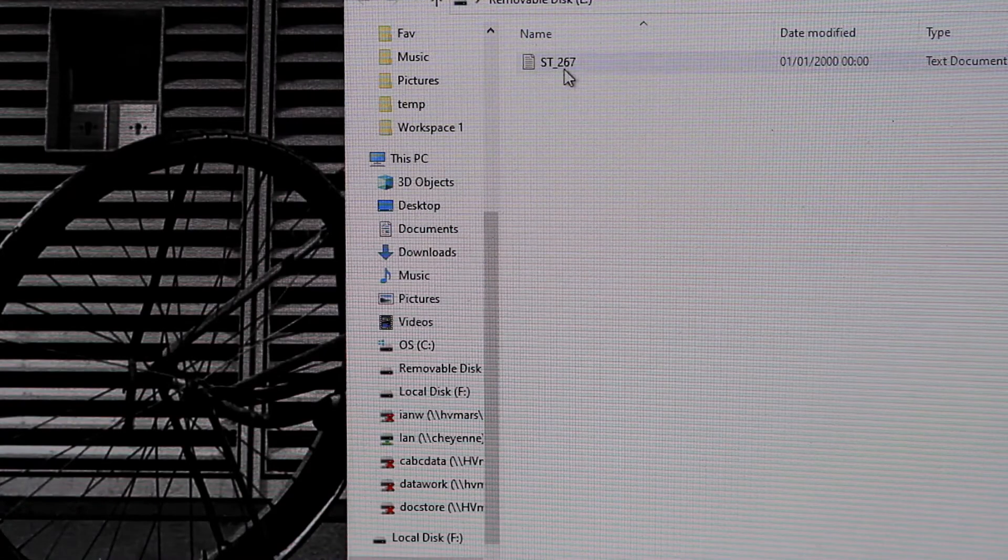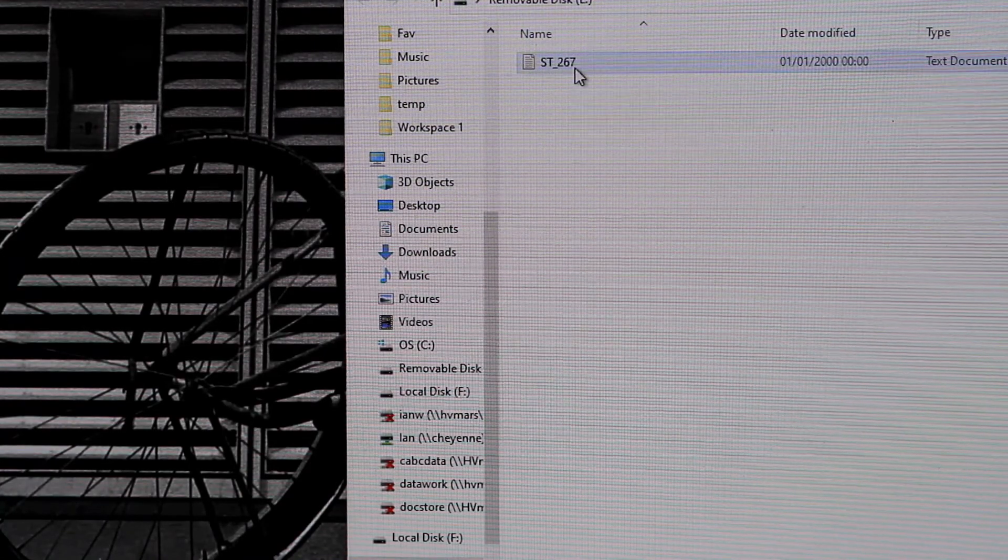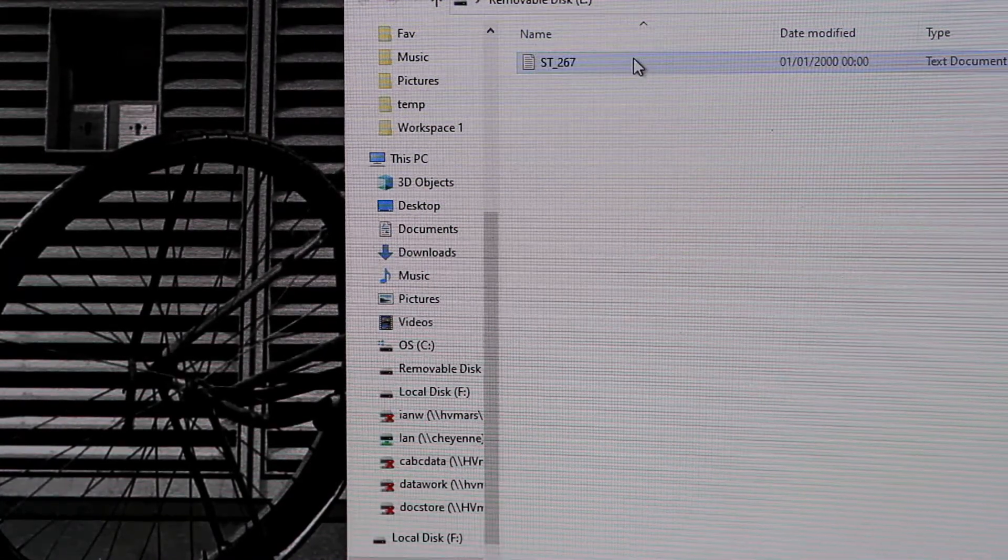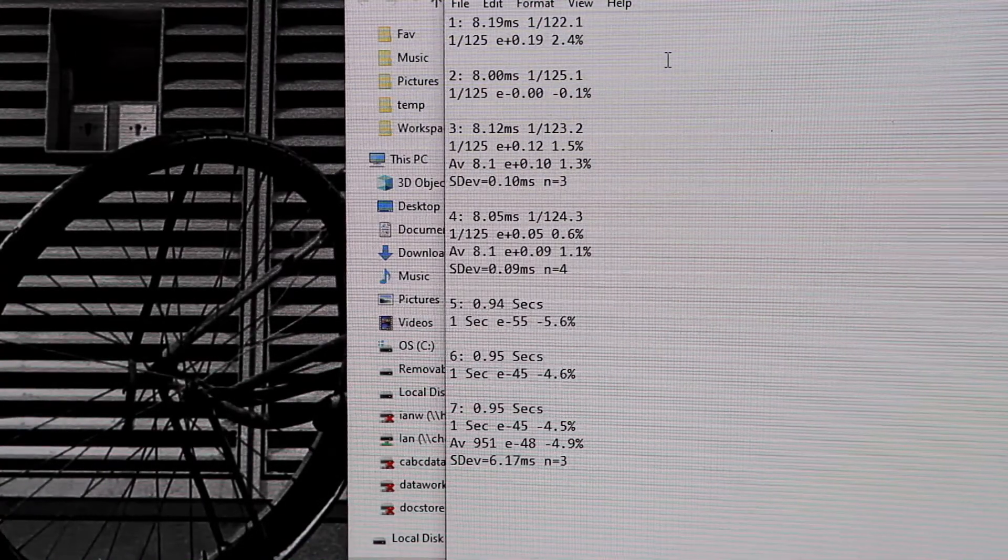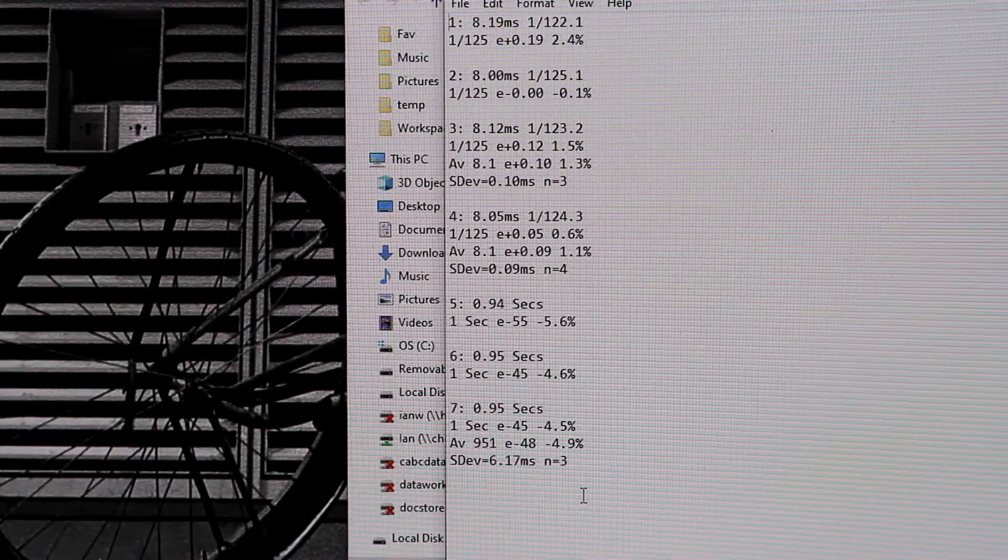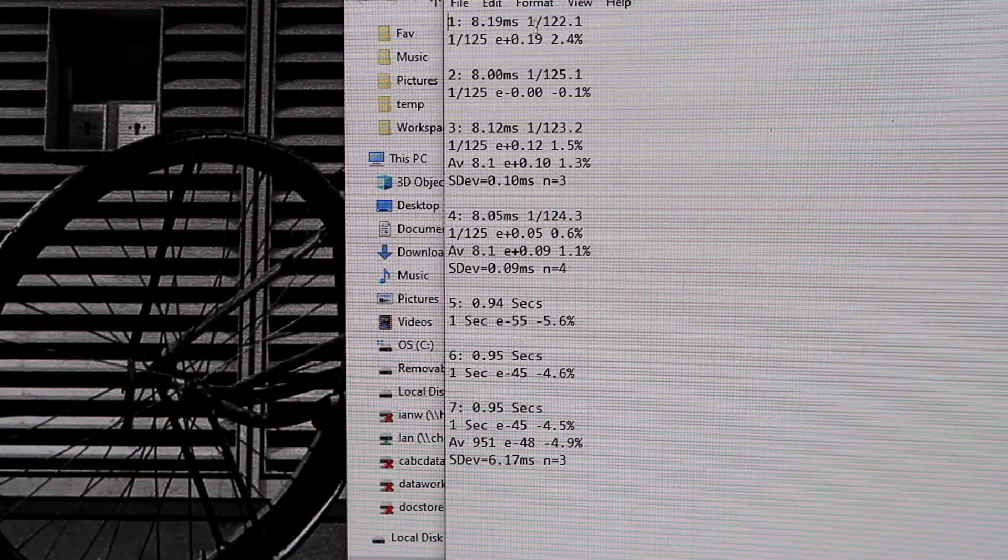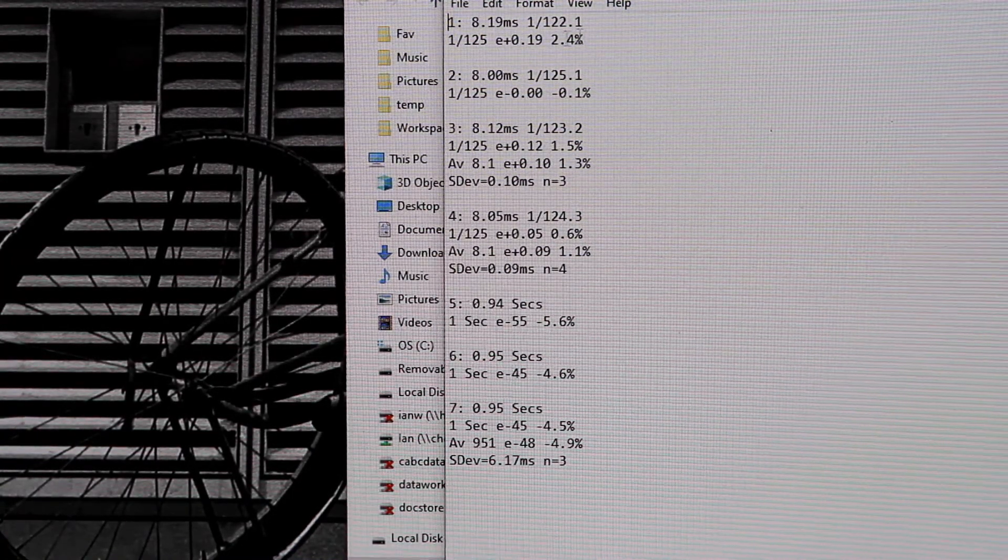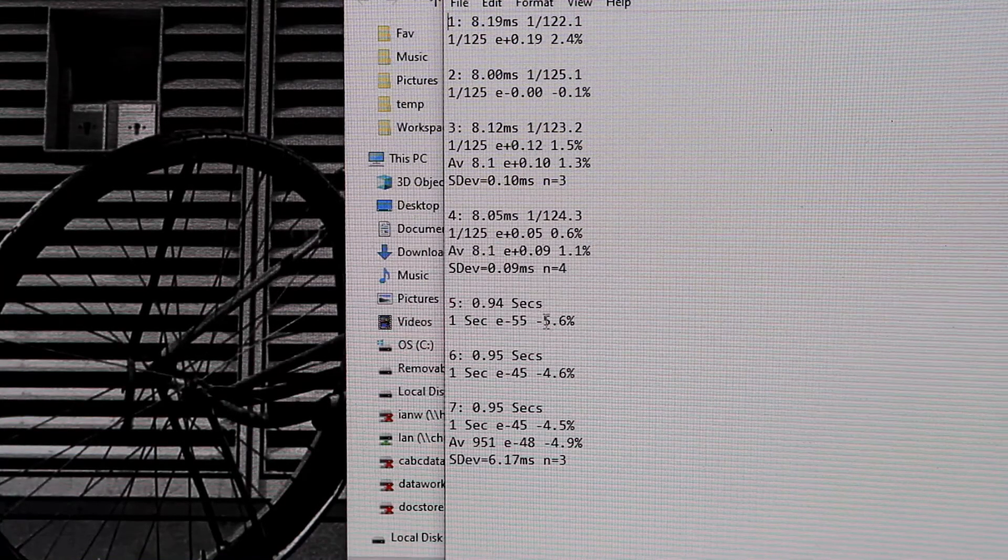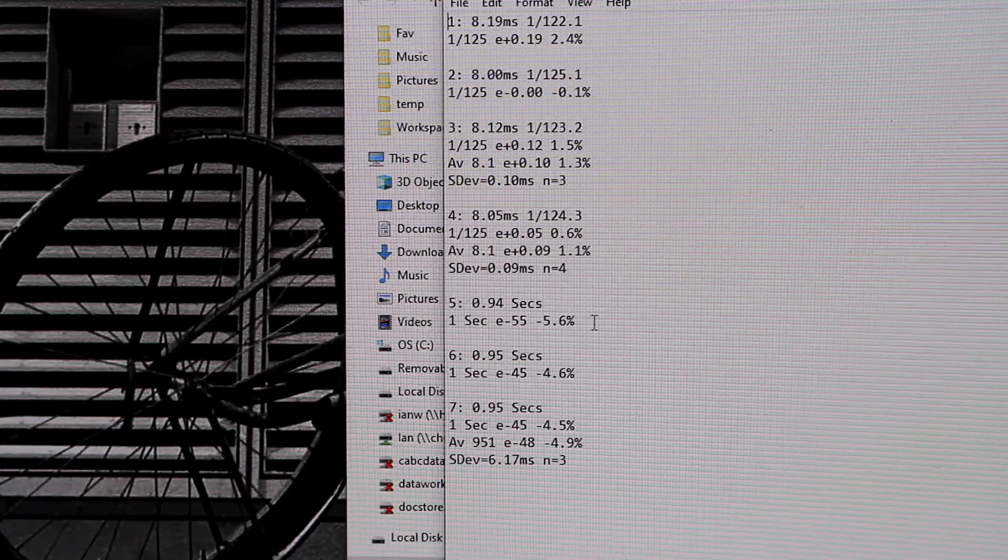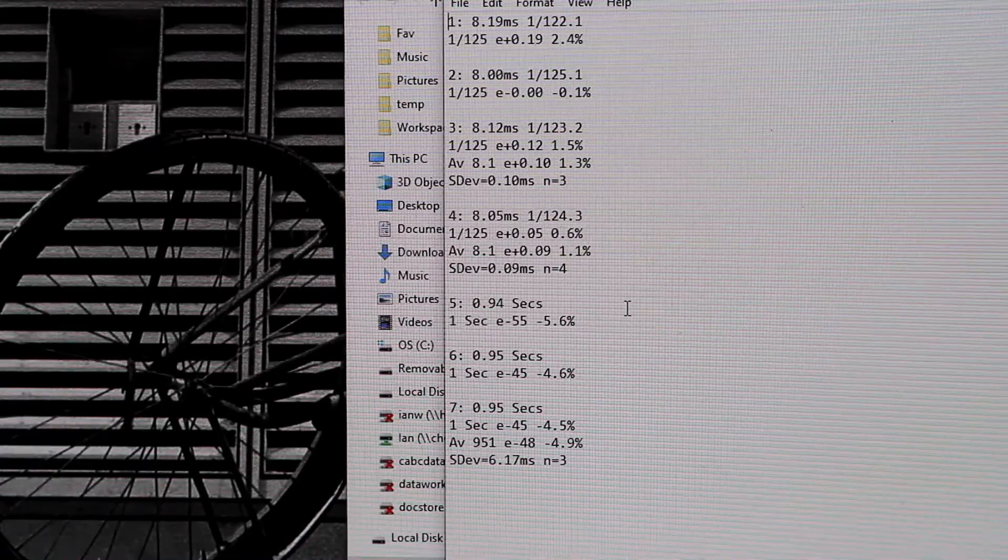And here's our test file. So the test file is ST267. That's the number of the tests we ran. And if we open it up we can just view it in notepad. And here is all the information exactly as we saw it on the display when we're running the test. So there's our first test which was 120 seconds of a second. And then you can take that file and you can store it or you can print it and put it with the camera or whatever you need to do.